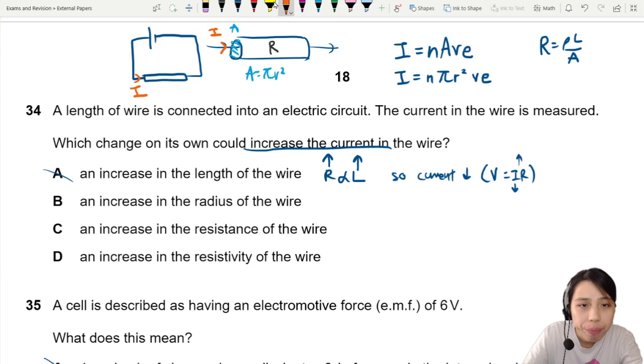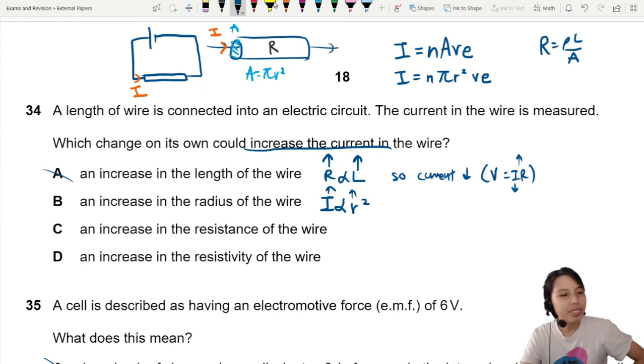So this time... We can say, current is proportional to the radius square. So if you increase the radius, you have a larger current. So current is increased. Yes, yes. I like this one. Let's check the rest.